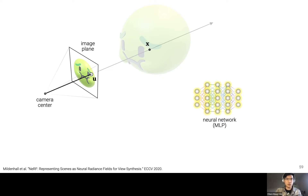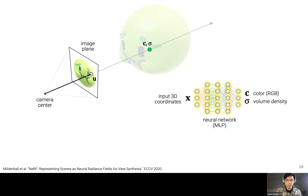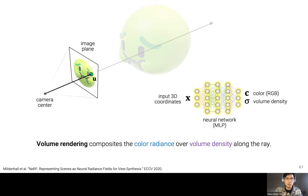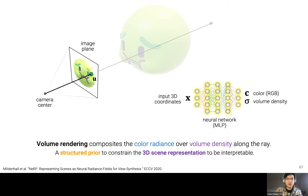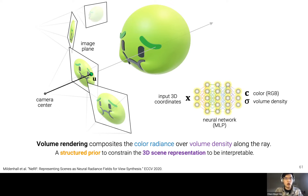Given a pixel coordinate u on the image, we cast this viewing ray into 3D space and consider a 3D point x sampled on the ray. We feed x into the MLP, which predicts color c and volume density sigma at that location. We densely sample many 3D points along the ray and use a ray compositing operation to composite all color and volume density samples using the volume rendering equation. Volume rendering is a deterministic operation that serves as a very structured prior for the neural network, making the scene representation interpretable. During optimization, NeRF considers all pixels from all frames so the scene representation is consistent across all viewpoints.